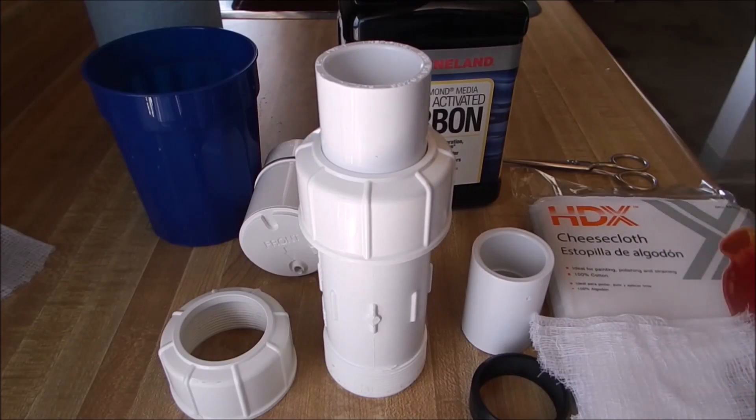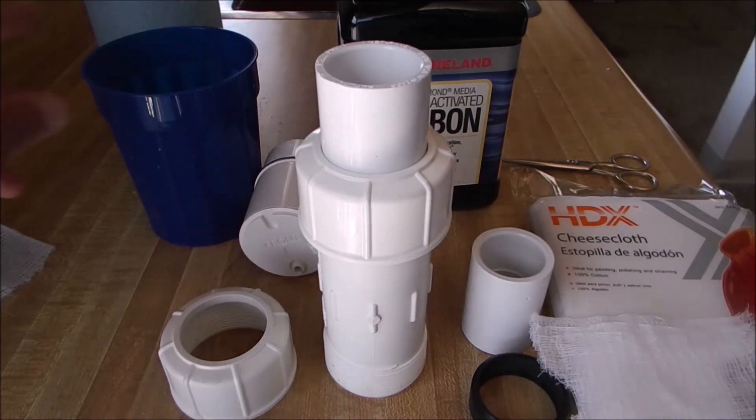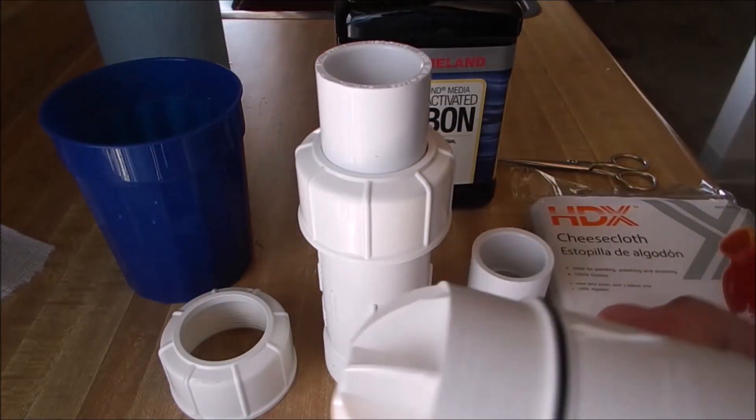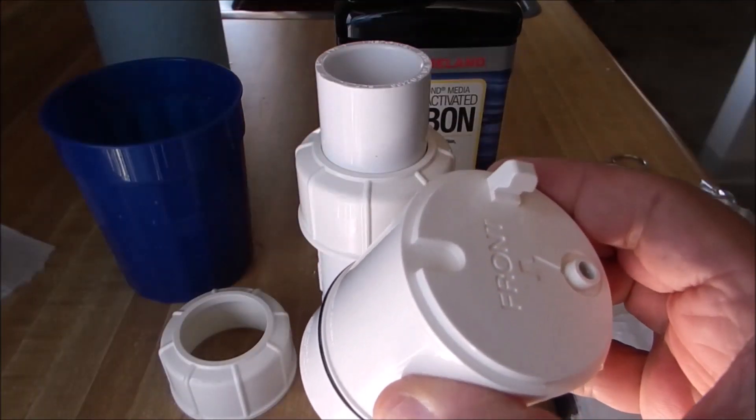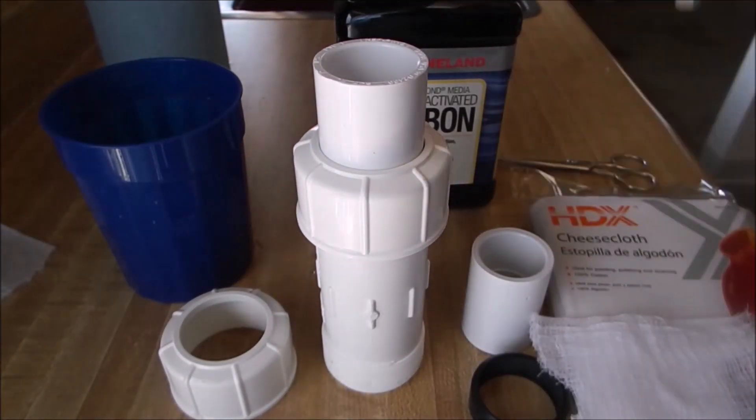I'm using cheesecloth for the filter, Black Diamond Media Premium Activated Carbon. I already got some activated carbon wet here. This is basically what they use in these filters that you use either right at the faucet or for your refrigerator. This is what it's going to have in it: activated carbon.